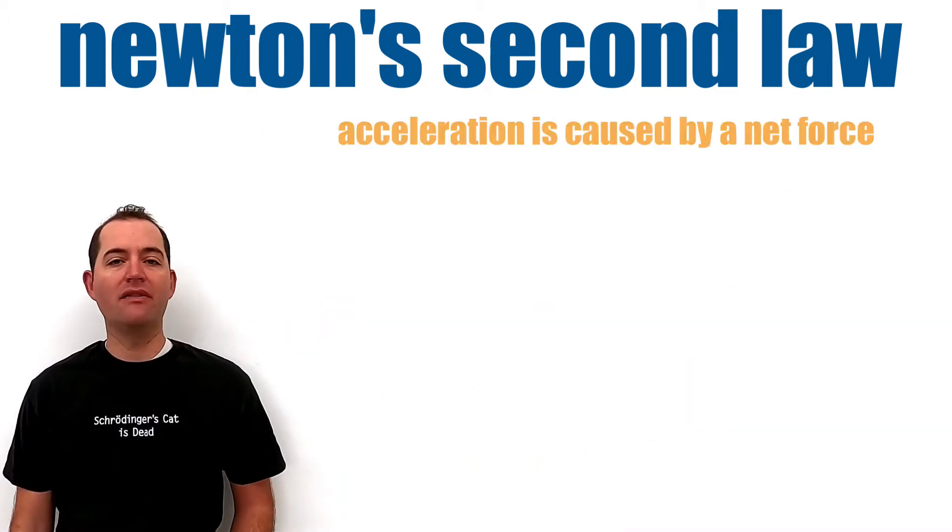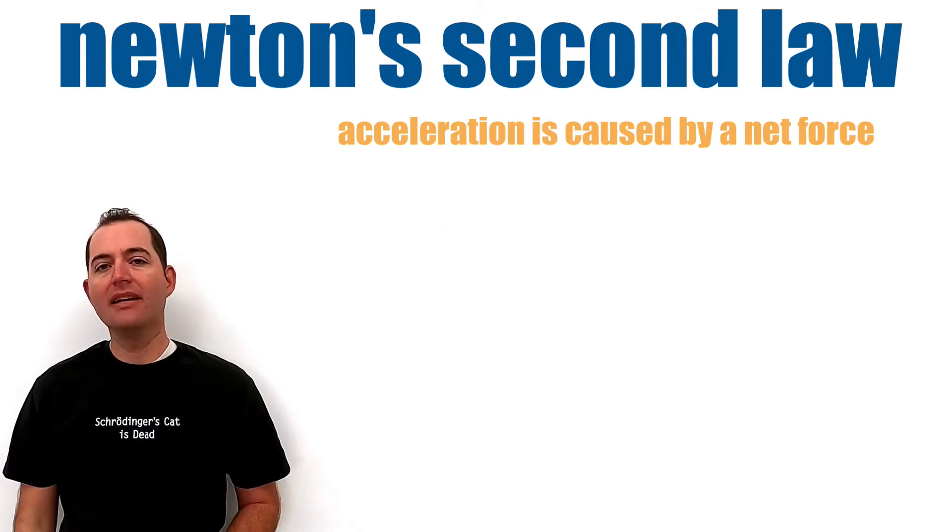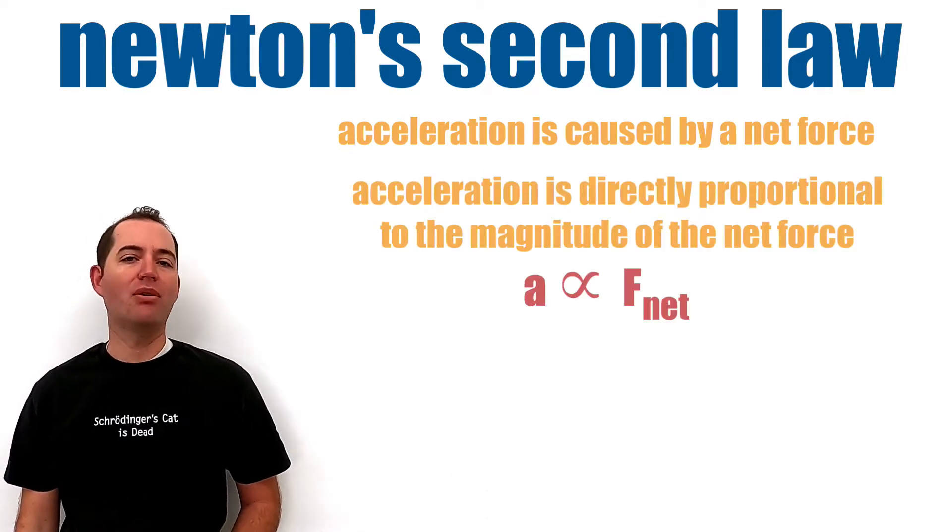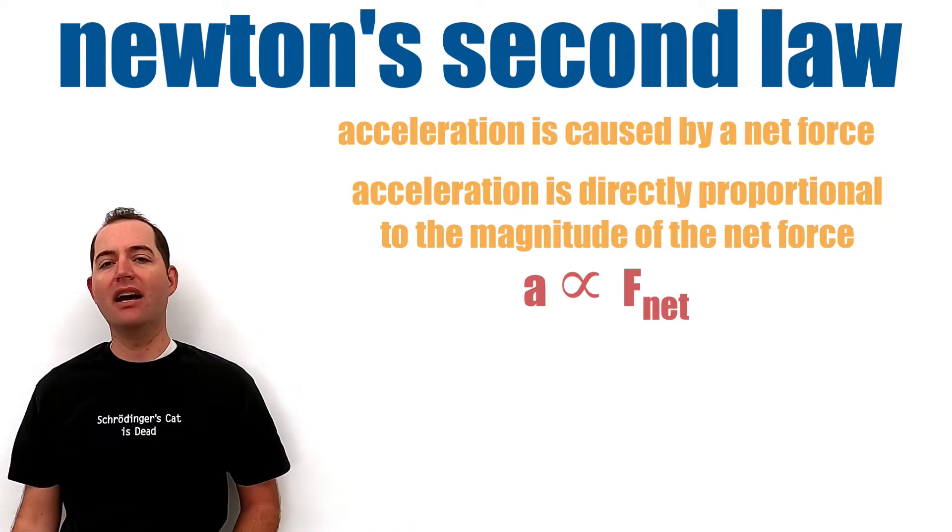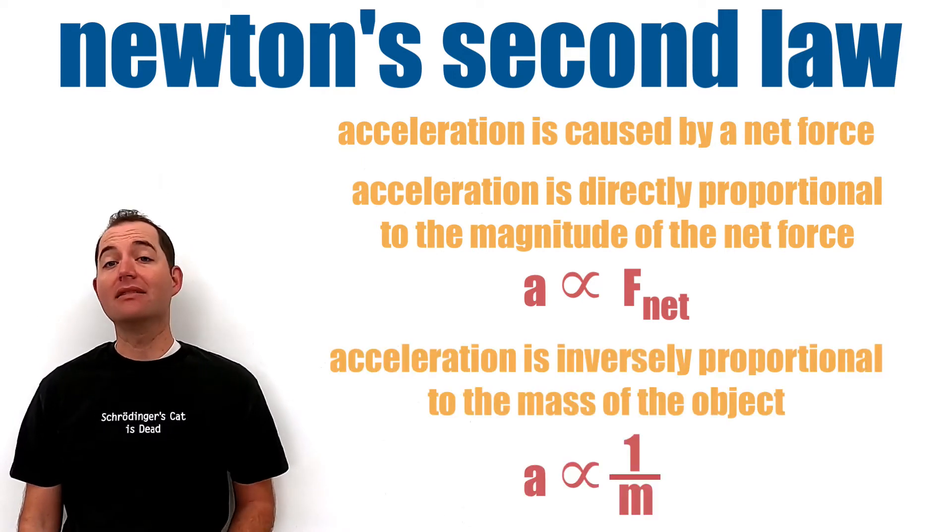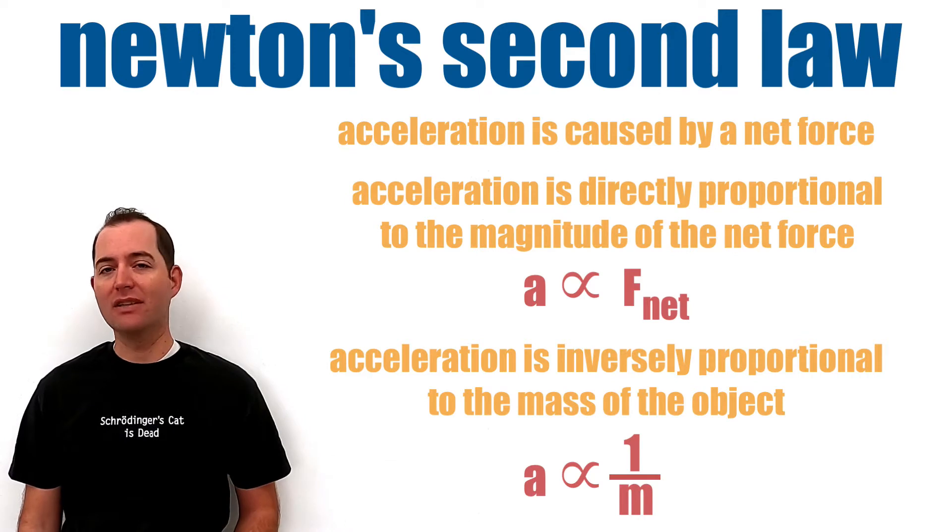The acceleration of an object is caused by the net force applied to it. The acceleration is directly proportional to the magnitude of the net force and in the same direction as the net force. The acceleration is also inversely proportional to the mass of the object.